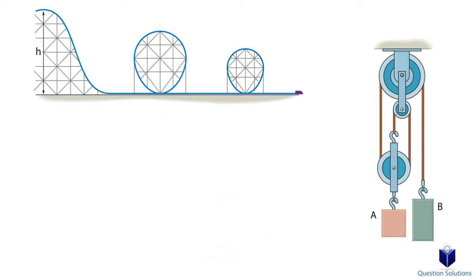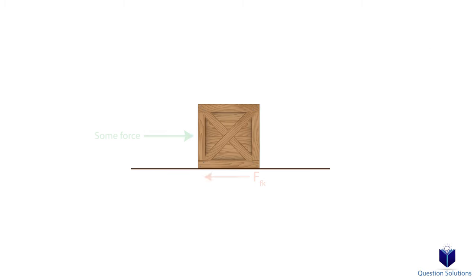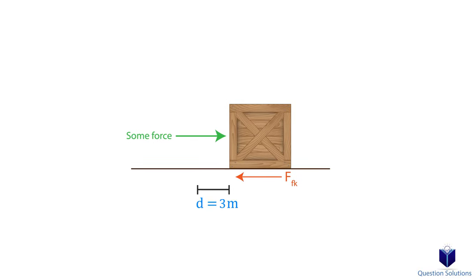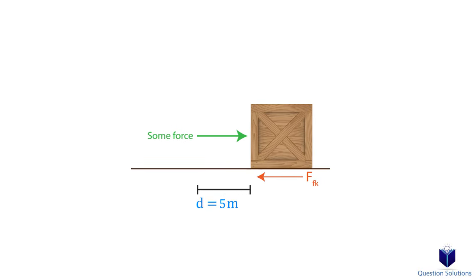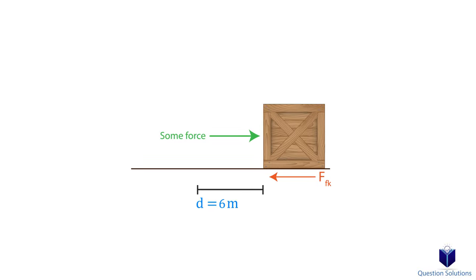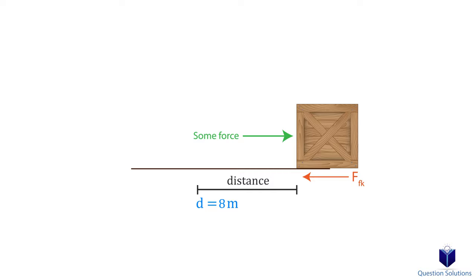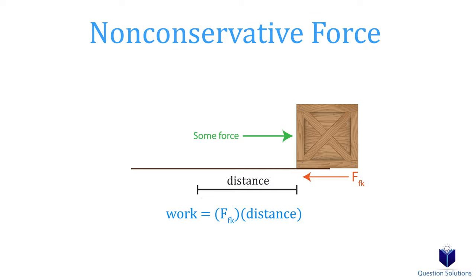If we use examples, this makes more sense. Let's say we have a box. When we push this box, there is a frictional force. The longer we push it along the path, the work done by friction gets bigger. And if we push it for a short time, the work done by friction is smaller. So since it's dependent on the length of the path, that is a non-conservative force.